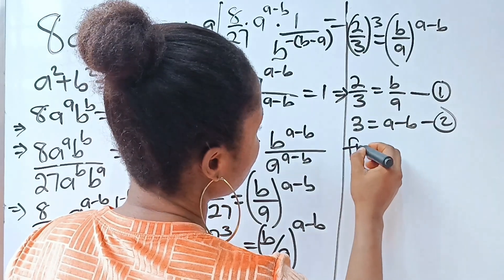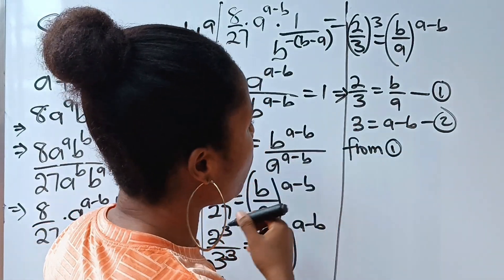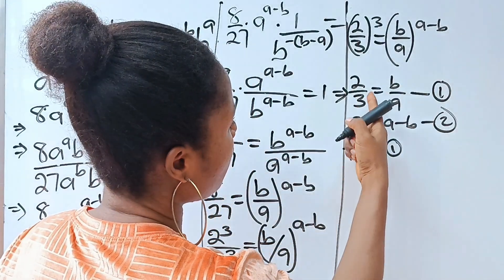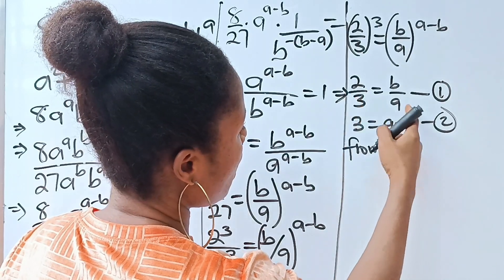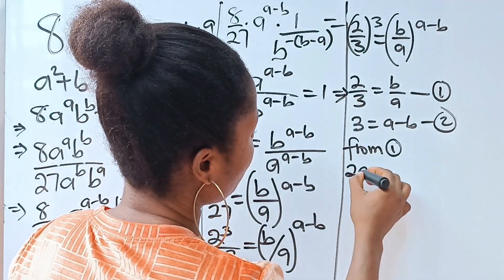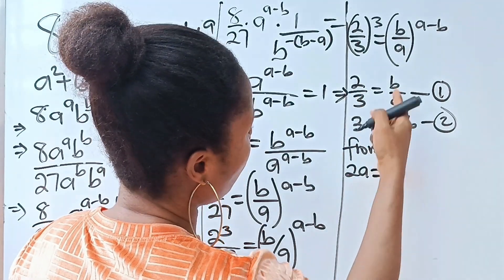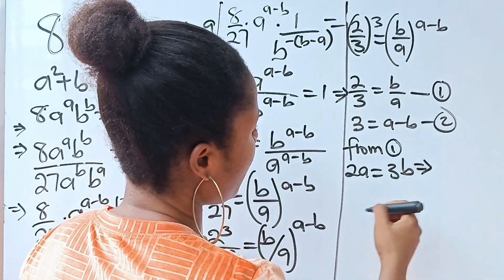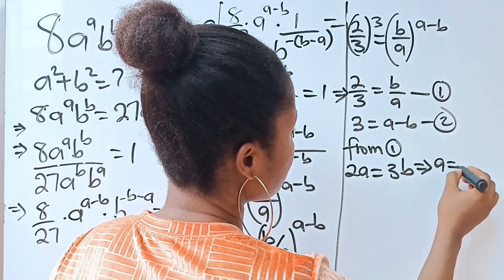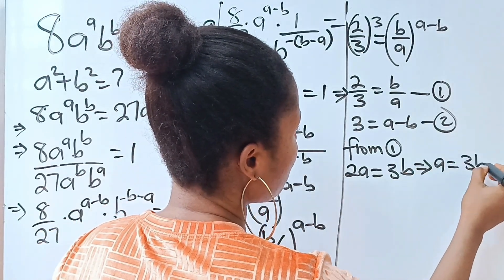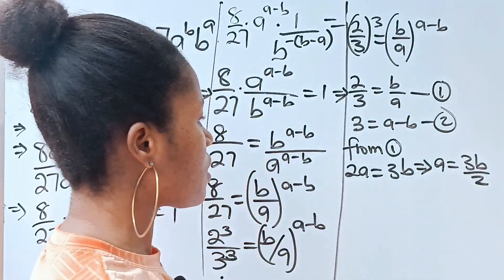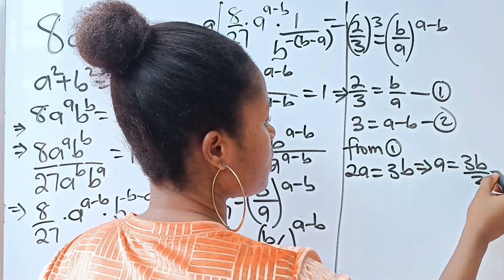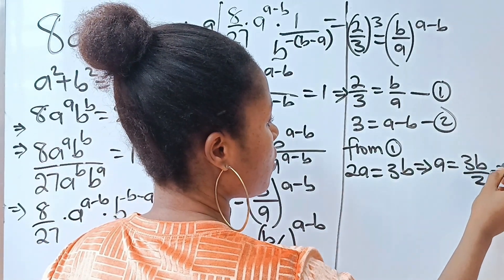From equation 1, if we cross multiply, we get 2a is equal to 3b. So this implies that a is equal to 3b over 2. Let's call this equation 3.